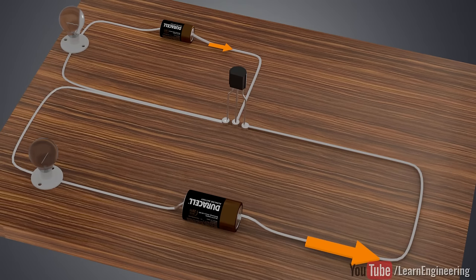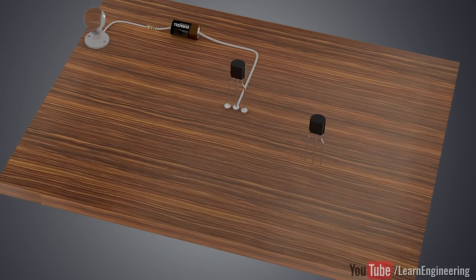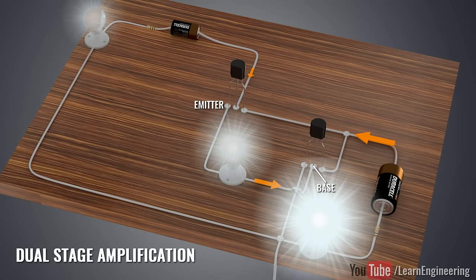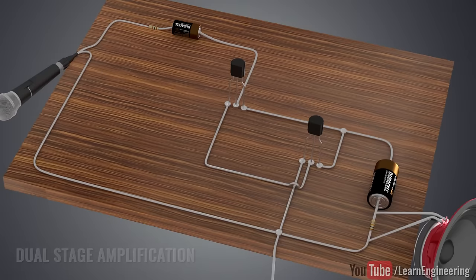You can further improve the amplification by introducing one more transistor. The base of this transistor is connected with the emitter of the first transistor. If you introduce a weak fluctuating signal at the input, like what you would find in a microphone, you will get an amplified signal at the loudspeaker.